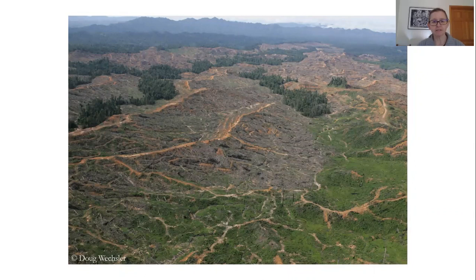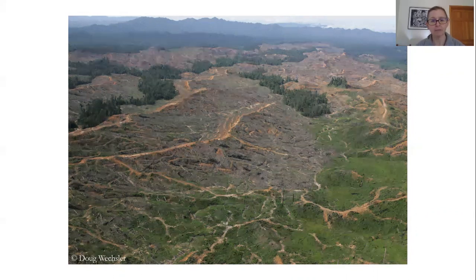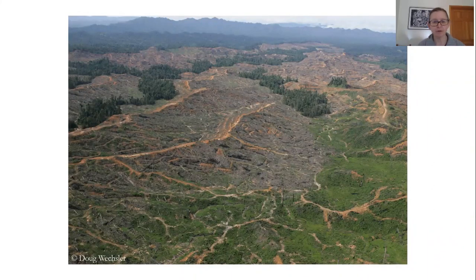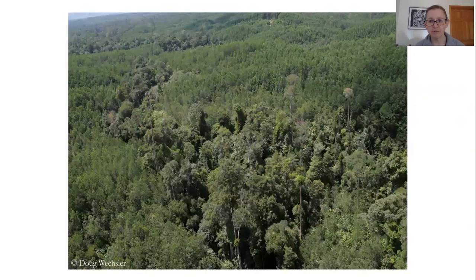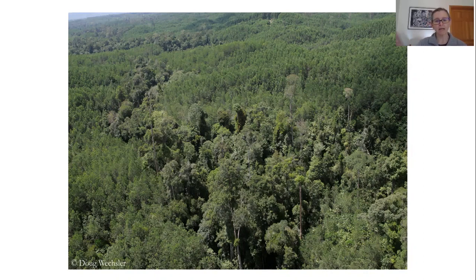This is what one of these areas looks like when it's been cleared for planting and plantation. The patches you're seeing are patches of native forests found on steep slopes and riparian buffers. You can see that the intervening matrix of landscape is not very permeable — you're not going to find a lot of birds in that area. But after about five to seven years, this is what that landscape looks like, and you can imagine that birds might be using it.